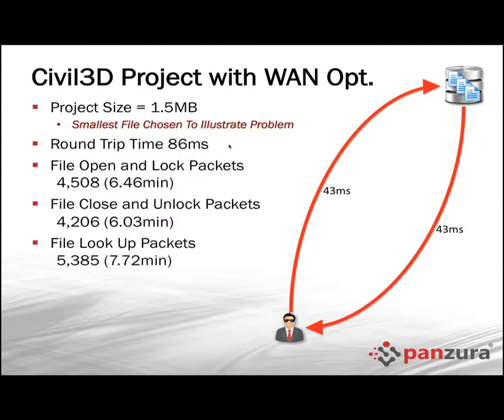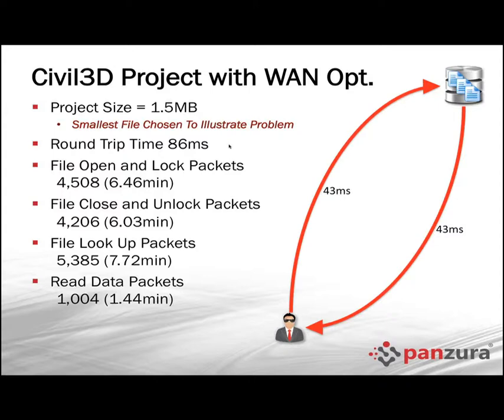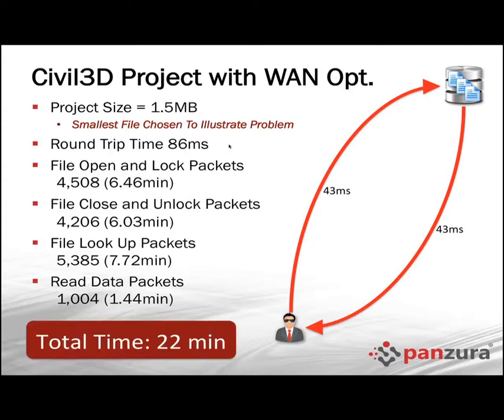These are things that bandwidth and WAN acceleration cannot address. You cannot cache the fact that somebody deleted a file, added a file, or changed the file. You can cache the file, but not the fact that it changed. After all those checks, you actually need to move the 1.5 megabytes — that's 1,000 packets, really no big deal. In this case, 7% of the network traffic was actual data and 93% was chatter. That adds up to 22 minutes — exactly what the end user was seeing waiting for that simple template to open in San Diego pulling it from New York headquarters.